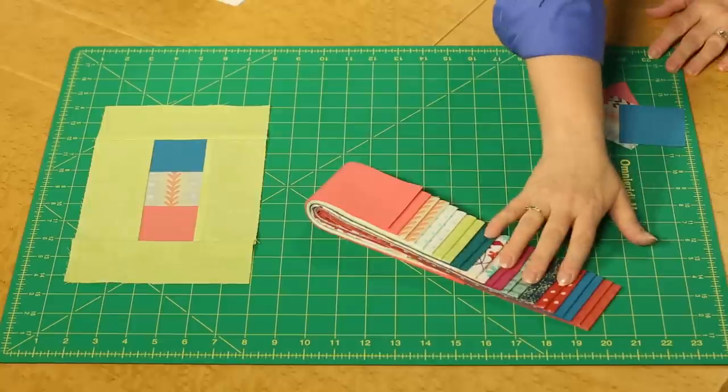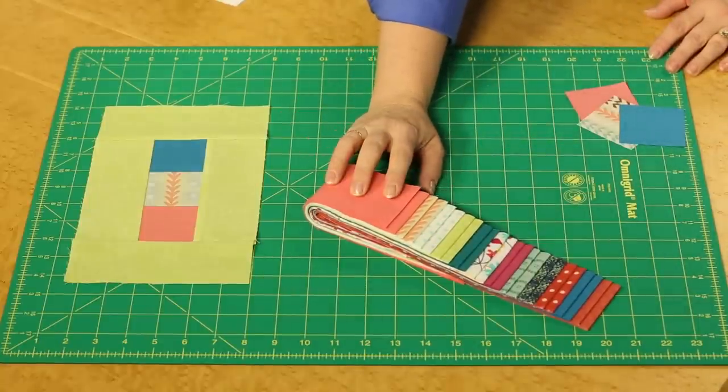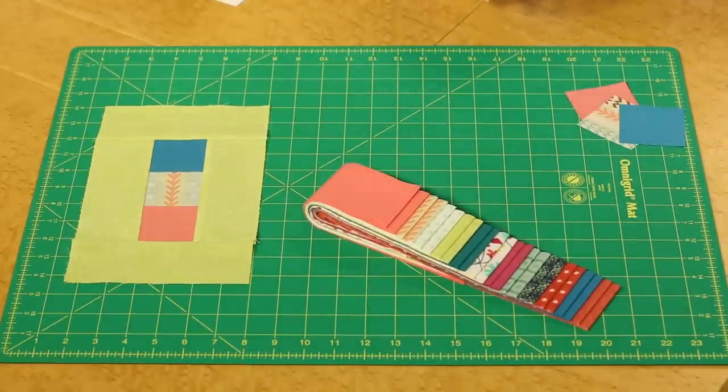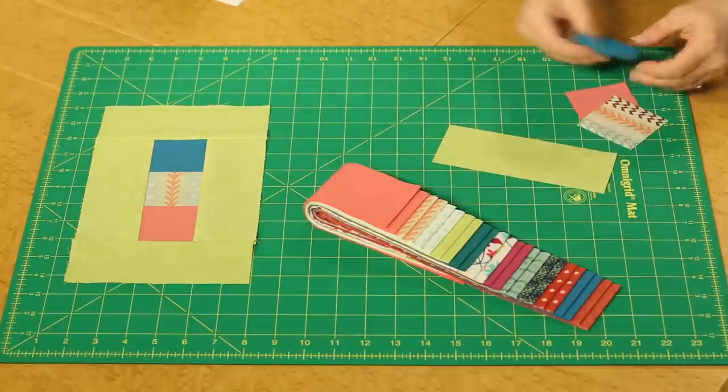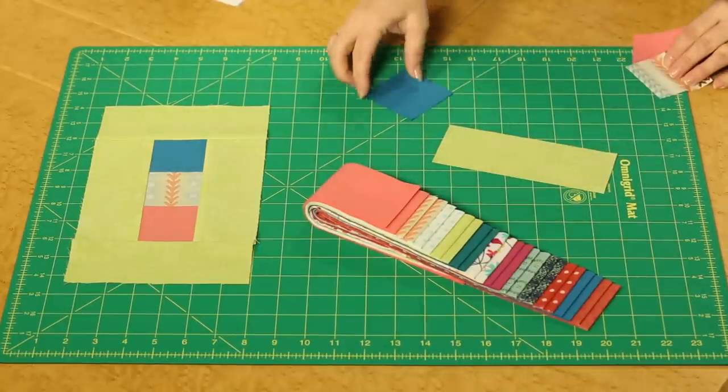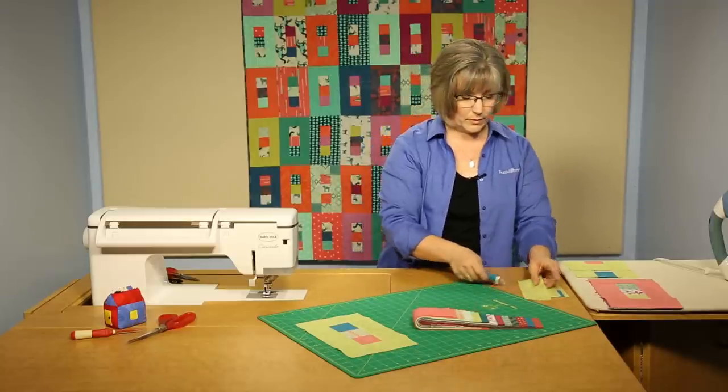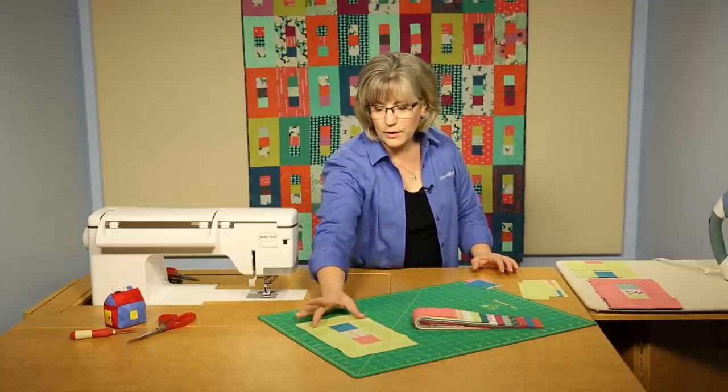So we're going to begin with those two and a half inch wide strips and from each of the strips required you're going to be cutting four rectangles like this and three squares from each of the strips in your set. Then it's time to start creating. We're working toward a block that looks like this.